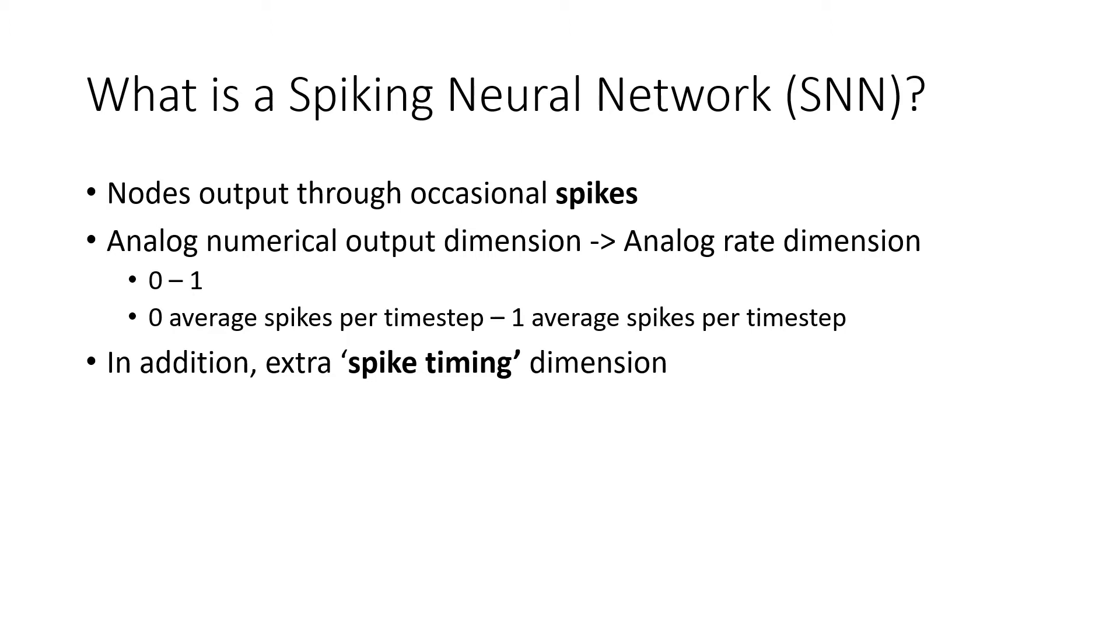So you kind of keep that dimension. In addition you have another dimension of spike timing, which is when a spike happens relative to another spike. It seems a little odd because they're both related, one is just kind of the average of the other, but you can get two different dimensions and do some more interesting things with this.